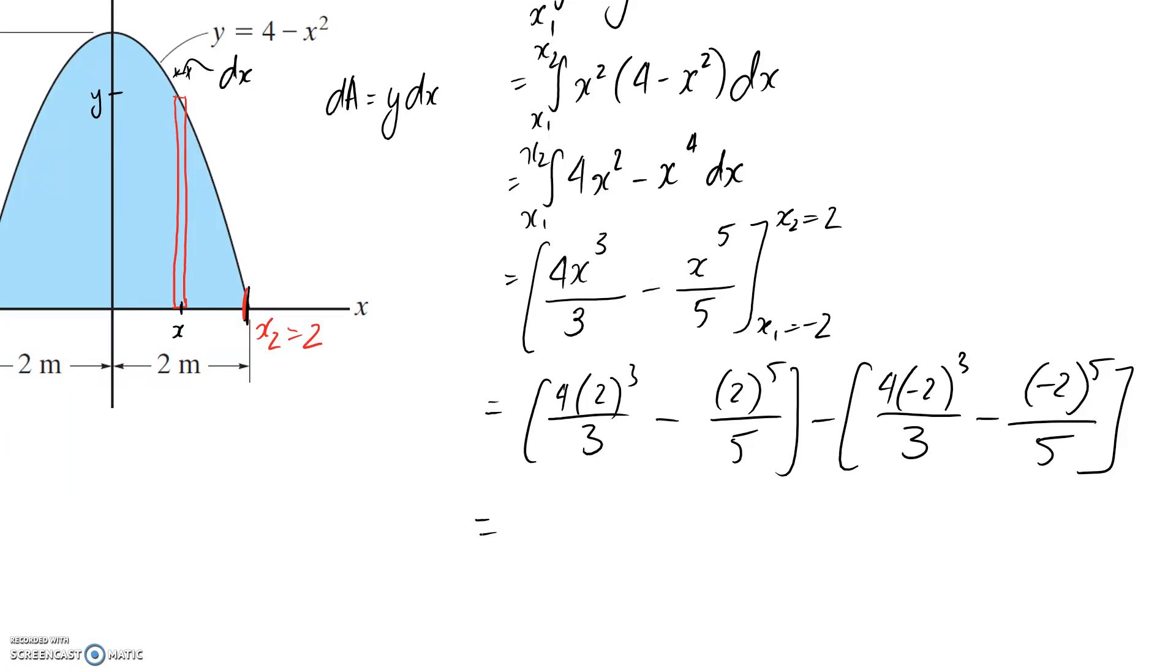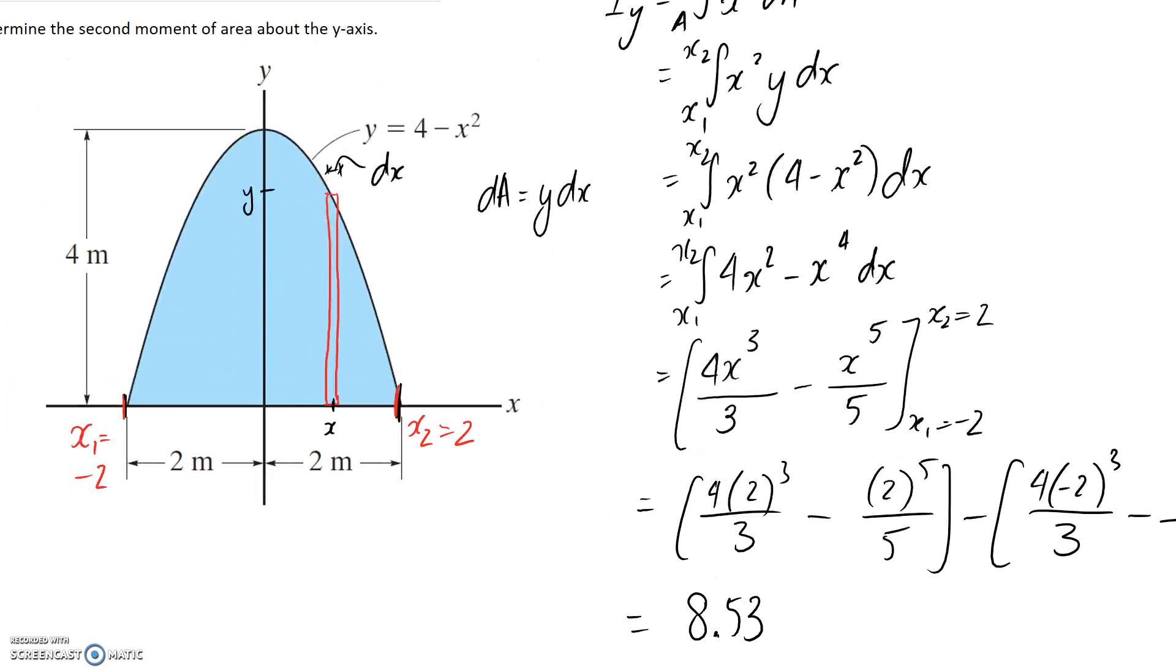Okay, so now I just need to type all of this in a calculator. And what you should end up with is 8.53. And the units are going to be whatever the distance units are to the power of 4. So we did this whole question using meters for the unit, so the answer here is going to be meters to the power of 4.